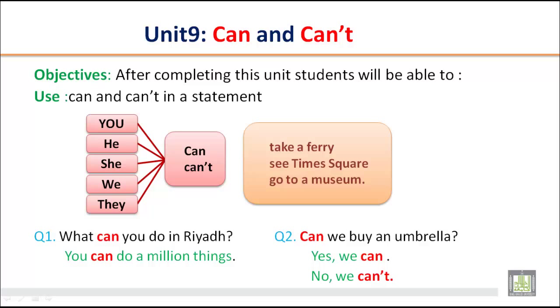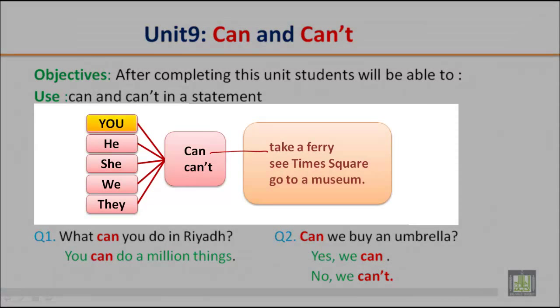You can use can with you, he, she, we, they. Like you can take a ferry. If you make a negative, you can't take a ferry. He can take a ferry. He can't take a ferry. He can see Times Square. He can't see Times Square. We can take a ferry. We can't take a ferry. They can't go to a museum. They can go to a museum.